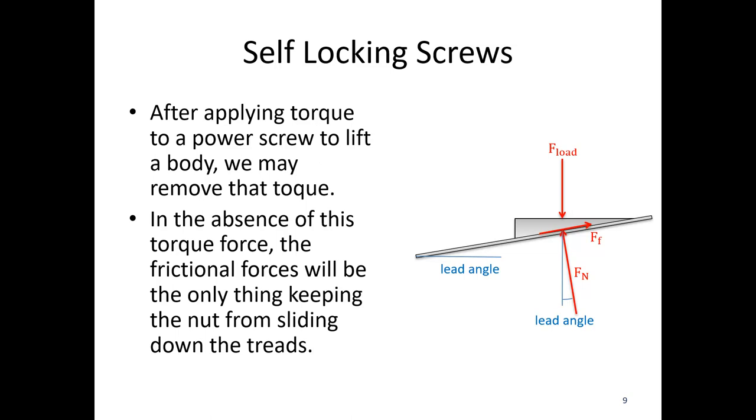So if the friction is large enough, if we release this, it just kind of stays where it is. If the friction is not large enough, the whole system kind of undoes itself. And if it stays in place, this is called a self-locking screw. If it kind of undoes itself when you release the input force, it is not a self-locking screw.